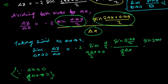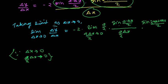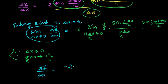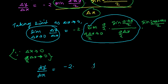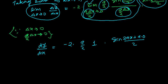This whole thing is sine of (2ax + a·delta x)/2. Now let's substitute delta x tends to 0: this converts to dy/dx. It's minus 2 times — this part gives 1 by the limit formula — except for the a/2 factor, and then sine of (2ax + a·0/2), so sine of 2ax. The two and two will cancel.